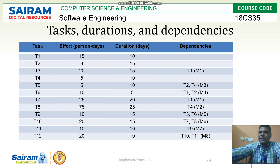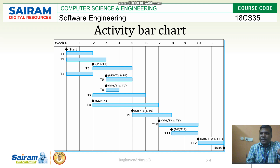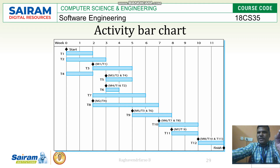In this project, 12 tasks are there and how they are being scheduled is shown here. It is an activity bar chart — a bar chart. Here you will come to know very easily how the dependencies work, when tasks are getting started and all these things. T1, T2, and T4 start in week zero. The milestones, as mentioned, are shown as rhombus marks — those are the milestones.